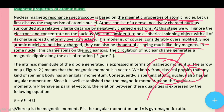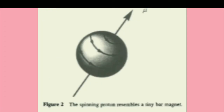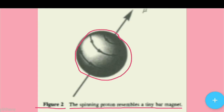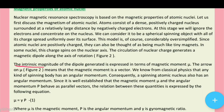The circulation of nuclear charge generates a magnetic dipole. Jab charge circulate hota hai, toh magnetic field generate hota hai — is case mein bhi magnetic dipole generate hoga along the axis of rotation. Spinning proton resembles a tiny magnet. Nucleus jo spin kar raha hai, uske wajah se humein milega magnetic moment mu. The intrinsic magnitude of the dipole generated is expressed in terms of magnetic moment, mu.